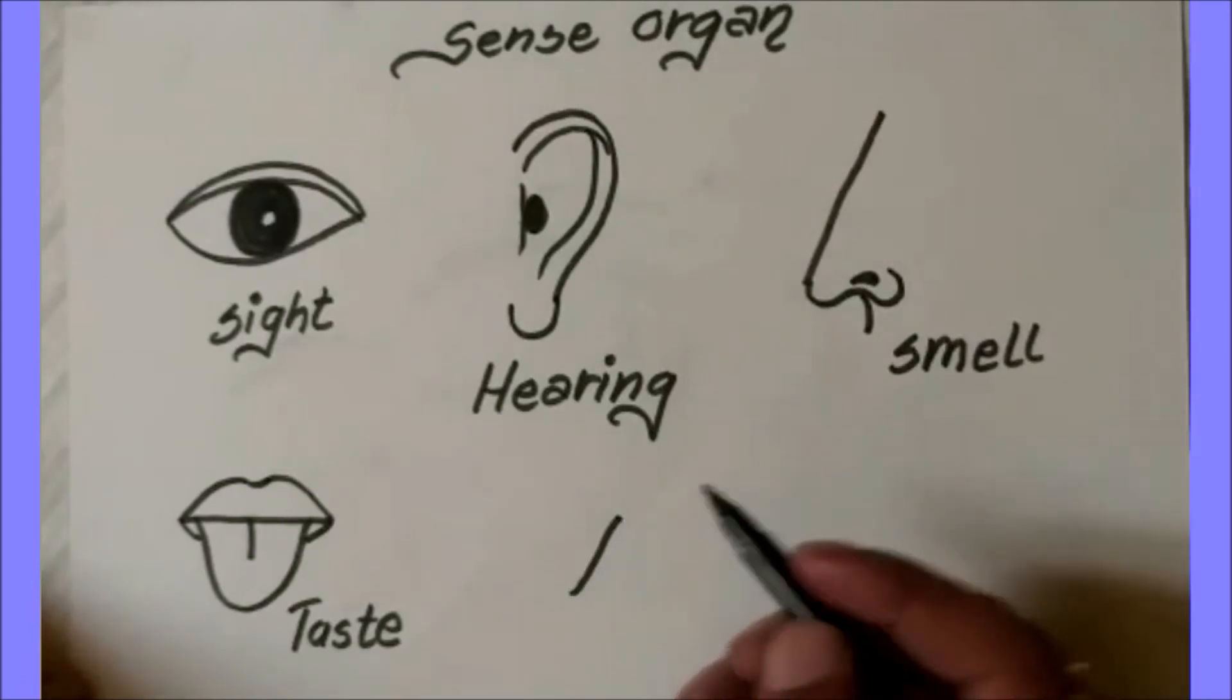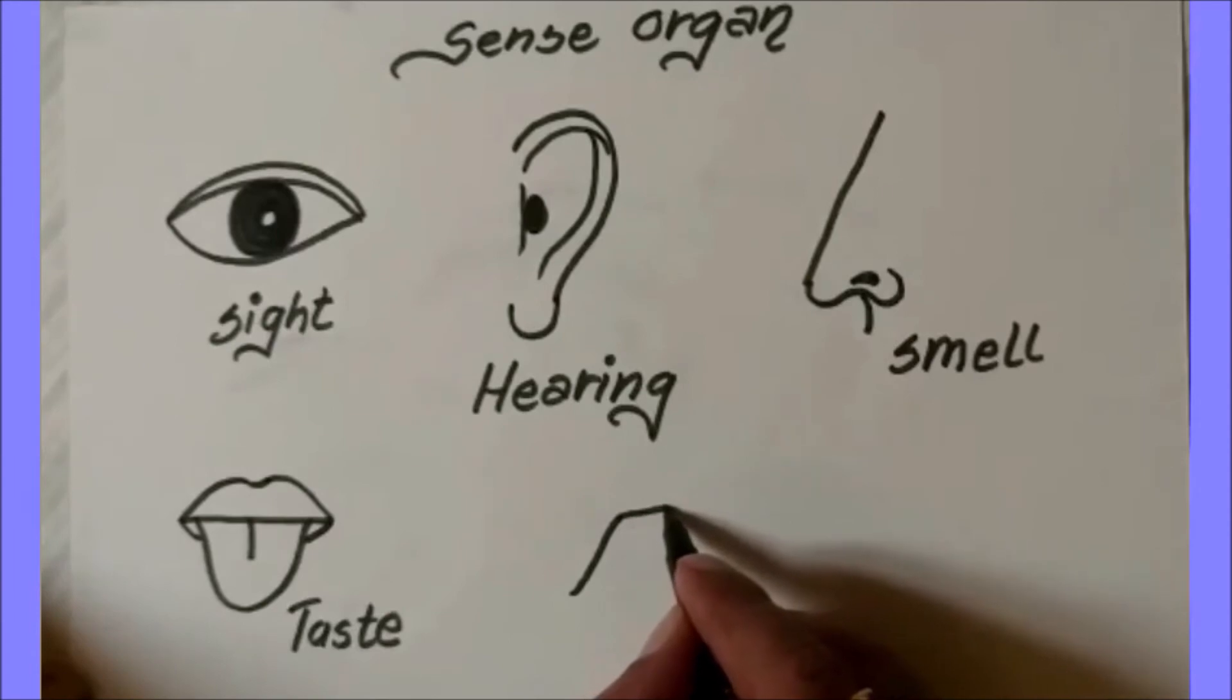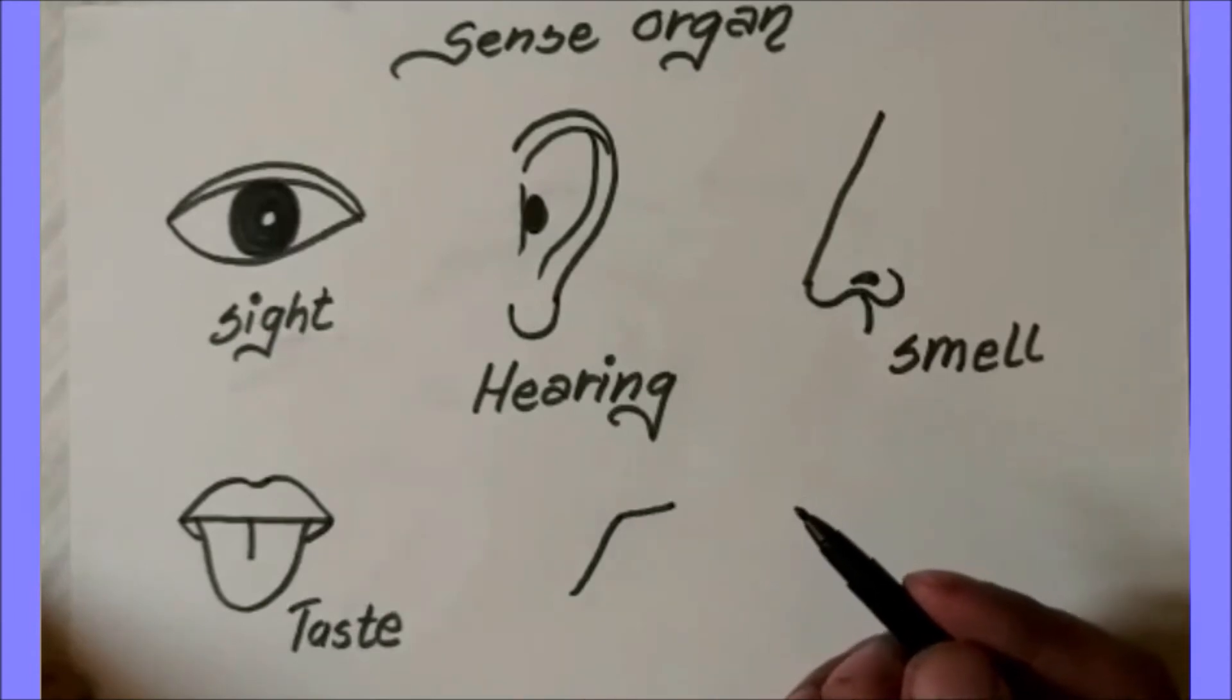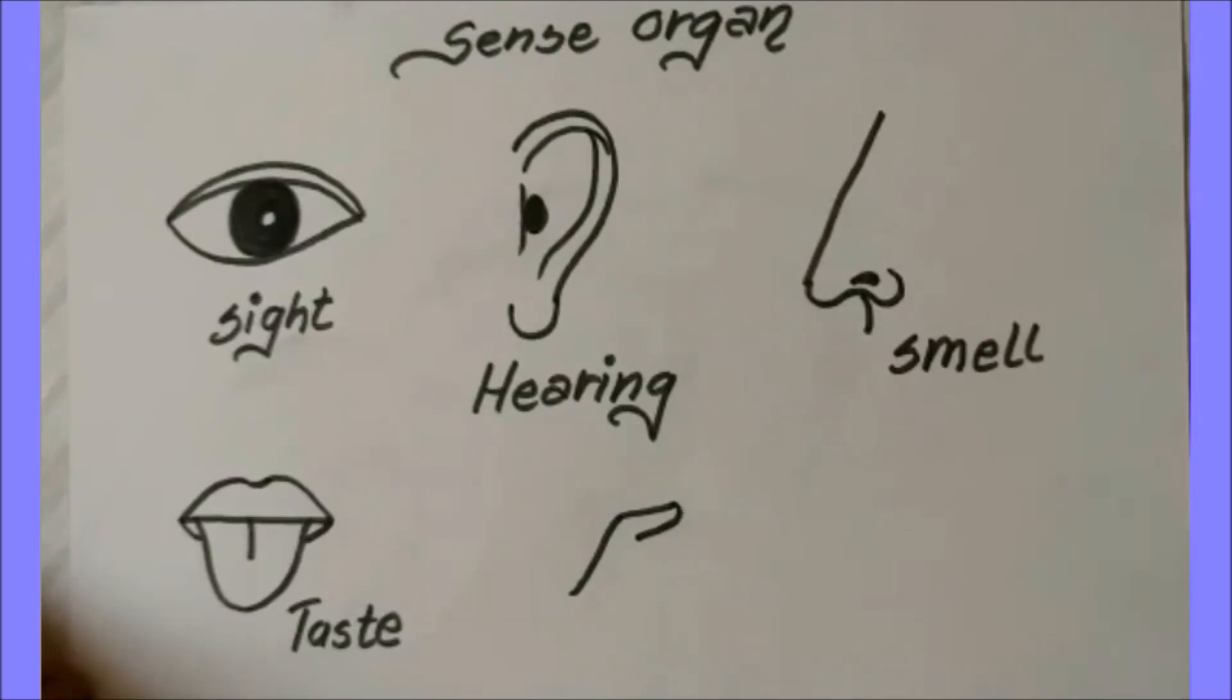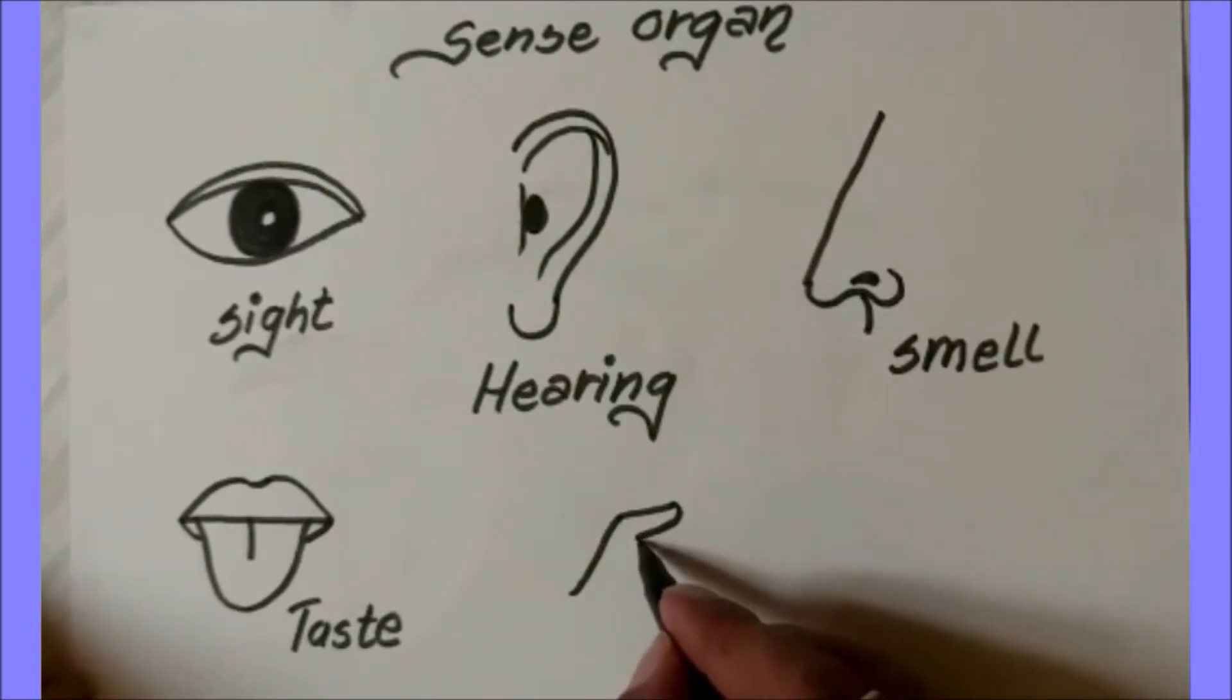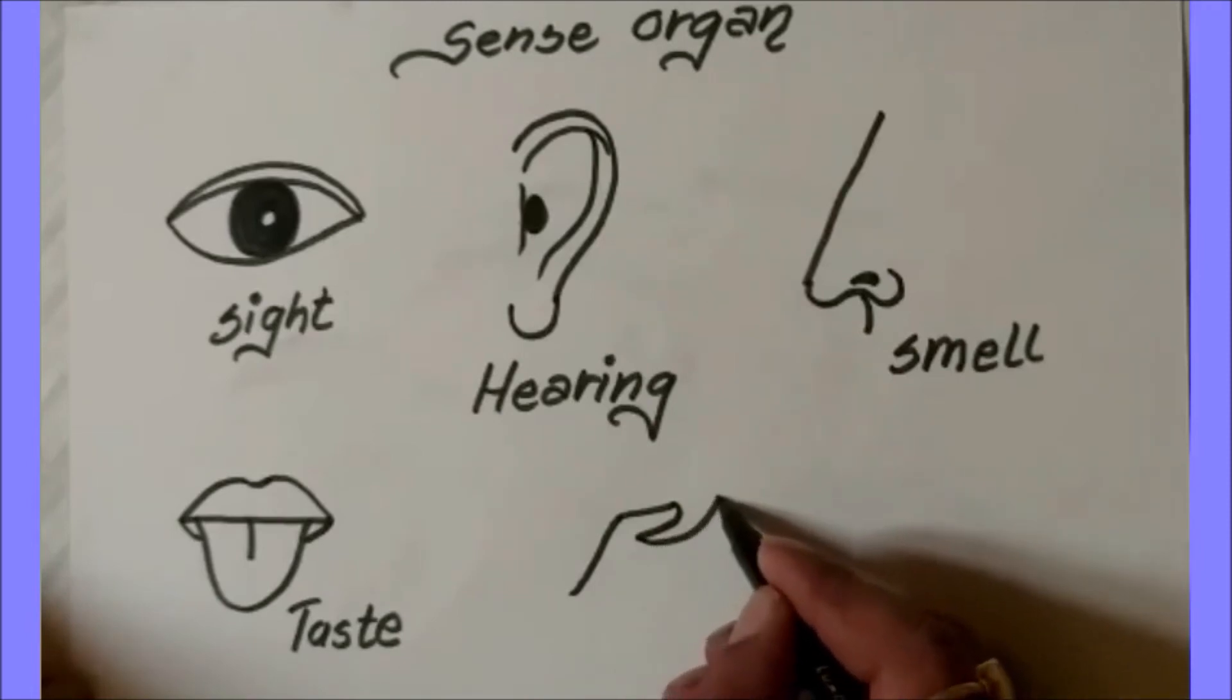First one slanting line, again one slanting line which is going little bit downside. Again curve coming back to show the thumb, again curve for the finger, this is my first finger.